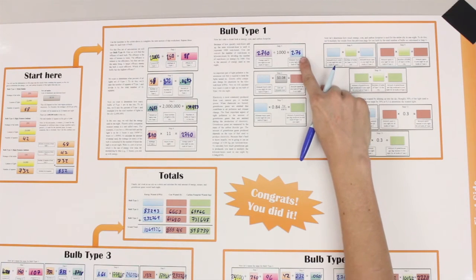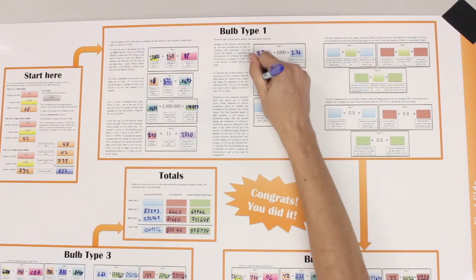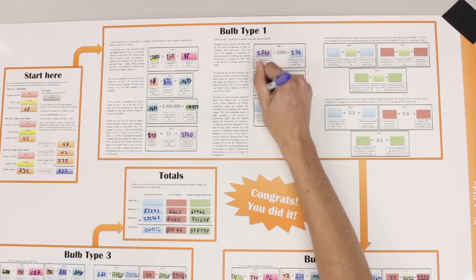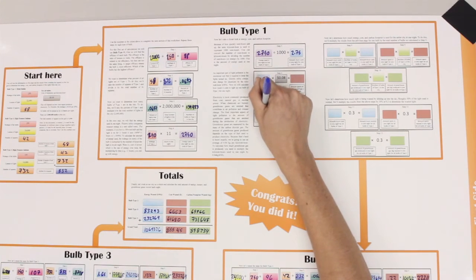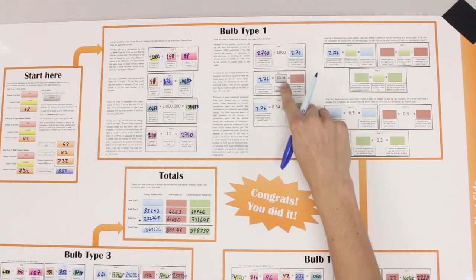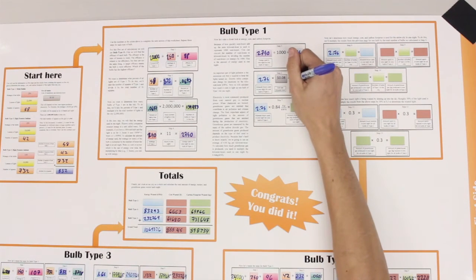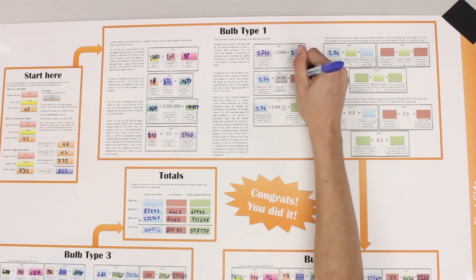Now, divide by 1,000 to give the kilowatt hours used in one night by one bulb. Once you've found this number, plug it into these three spaces right here. Now, multiplying by the cost of the kilowatt hour, we find the total cost to run one light bulb of bulb type 1.